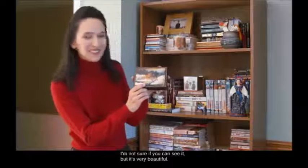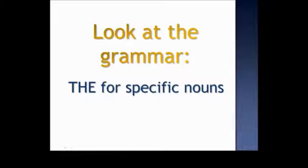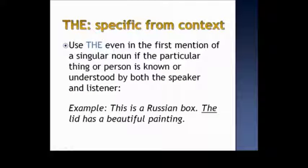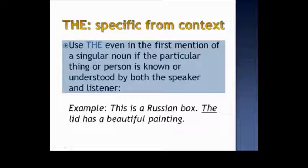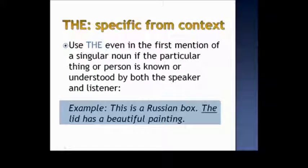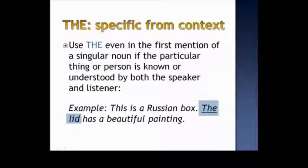As you know, this is a box — it's a Russian box, and the lid has a beautiful painting. Note that we use the definite article THE with a noun that is specific from context. We use THE even on the first mention of a singular noun if the particular thing is known or understood by both the speaker and listener. For example, I said, 'This is a Russian box. The lid has a beautiful painting.' I say lid for the first time, but I use the definite article THE — the lid — because you know which specific lid I'm speaking of: the lid of this Russian box.